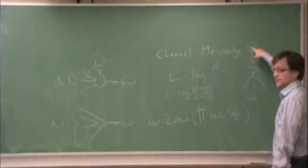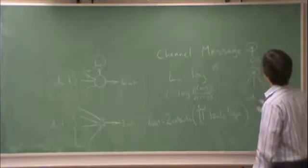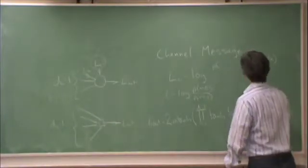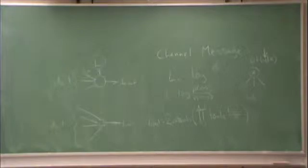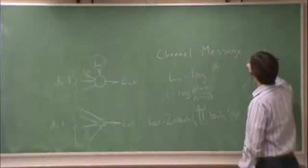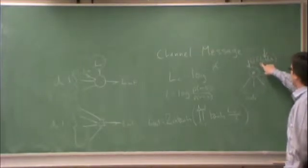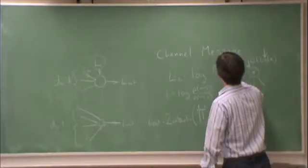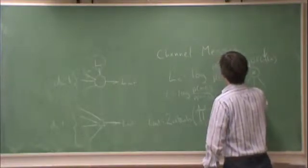Now, y is observed. Our rule, which I've mentioned previously, is that when we observe something in a factor graph, we get rid of it and simply plug it in to whatever expression it appears in. So that means LC, the message traveling along this edge, is the log likelihood ratio for x, where y is plugged in. So whatever y is, I plug it in and get p of y given x equals zero divided by p of y given x equals one.